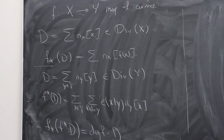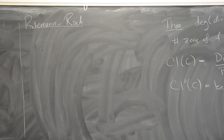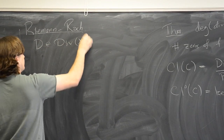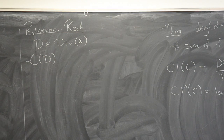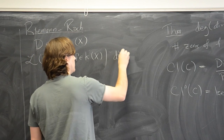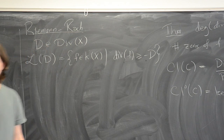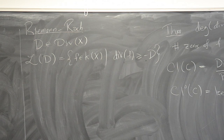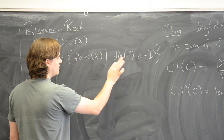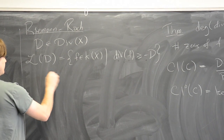Now the Riemann-Roch theorem — one of the most important theorems about algebraic curves. Suppose D is a divisor on our curve X. I'm going to define a space of functions called L(D): it's the set of functions on the curve such that the divisor of the function is greater than or equal to negative D. Comparing two divisors is done coefficient-wise. Zero is in here by convention, and this set is closed under addition and scalar multiplication, so it's actually a vector space.